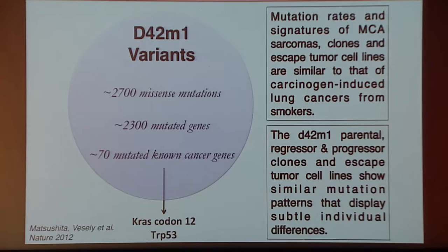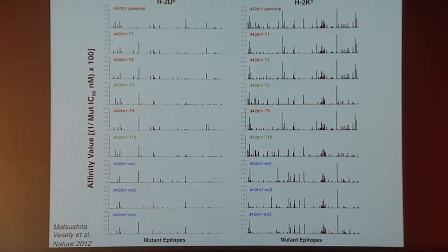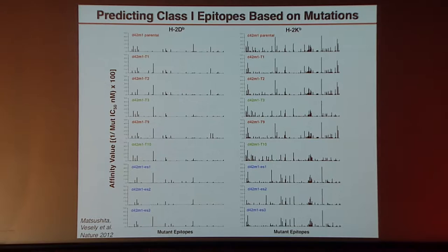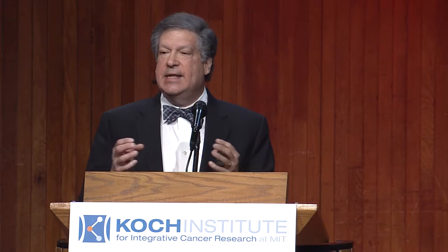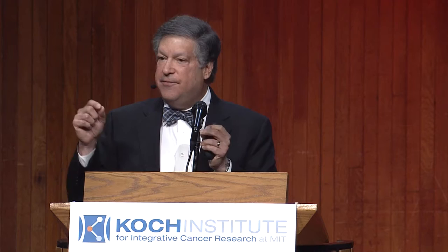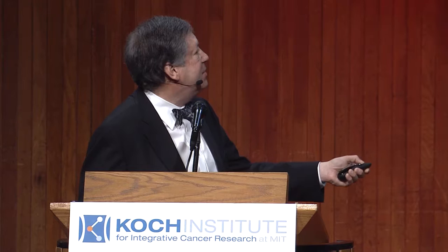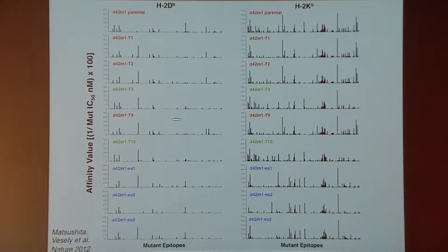So Matt Vesely, who was a graduate student in the lab at the time, took this data, pipelined it into immunoepitope prediction programs — programs that look at all the MHC class I and class II epitopes and then predict, based on input sequences, what the likely affinity of your sequence would be for class I molecules. Since this is 129-strain mice, the two class I molecules we're looking at are H2D of B and H2K of B. You can get an array of potential predicted epitopes, the height of which represents the affinity of each epitope for either H2D of B or H2K of B.